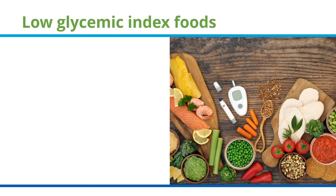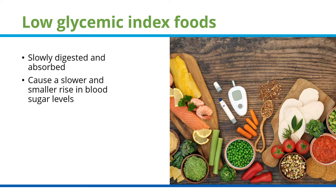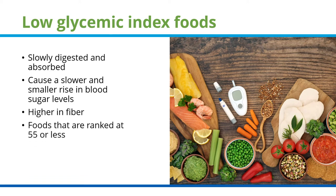Low glycemic index foods are slowly digested and absorbed, causing a slower and smaller rise in blood sugar levels. They are higher in fiber and are ranked at 55 or less on the GI scale.